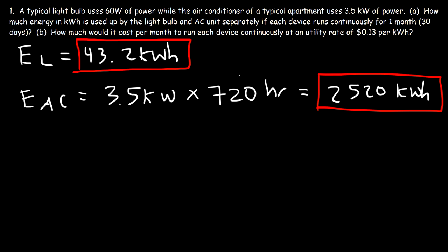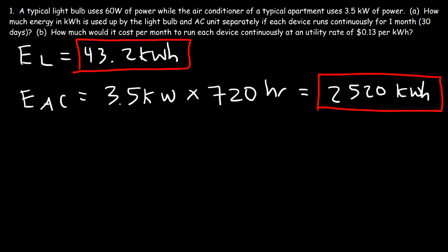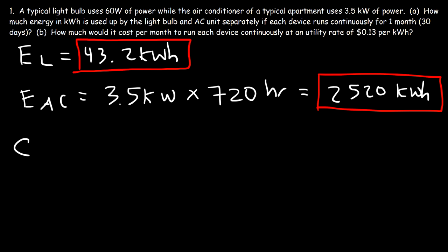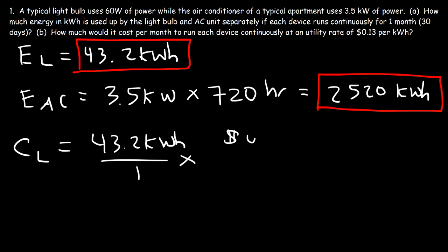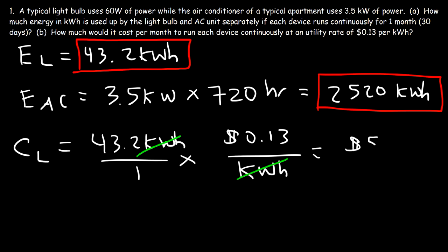Now let's move on to part B: how much would it cost per month to run each device continuously at a utility rate of 13 cents per kilowatt hour? To find the cost, take the energy in kilowatt hours and multiply by the utility rate. For the light bulb, that's 43.2 kilowatt hours times 13 cents per kilowatt hour — so 43.2 times 0.13 — which comes out to about $5.62 per month.